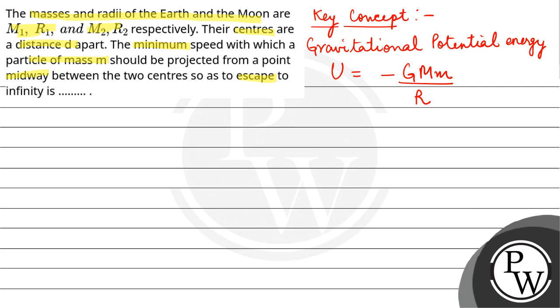Now according to question, you have Earth with mass M1 and radius R1, and you have Moon with mass M2 and radius R2. And both their centers are at distance d. So if we talk about midway, midway will be d by 2.